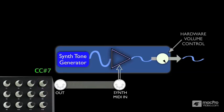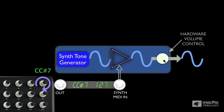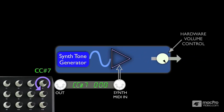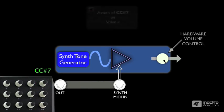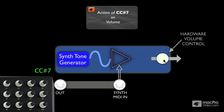We can turn the volume back up to maximum by sending it a CC7 message with a value of 127, or we can silence the volume completely by sending it a CC7 message with a value of 0. This behavior is built in to most MIDI instruments, so you don't have to do any custom sound programming to use CC7 messages as a volume control.